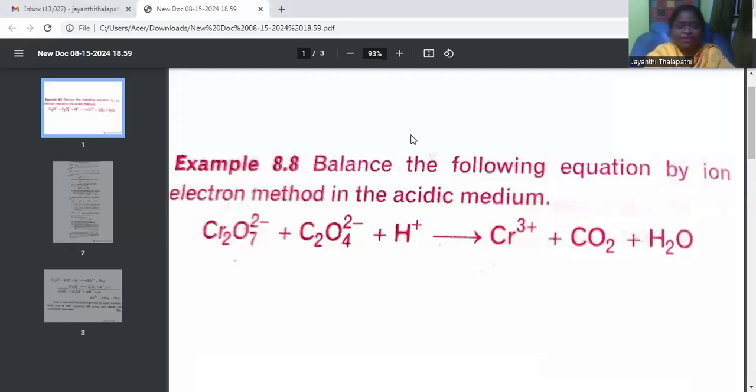Hi, today we are going to see how to balance the equation by using ion-electron method in acidic medium. The same question which is given in the textbook, but still people are finding it difficult, so we'll clarify it. You can try any question. So, Cr2O7^2- plus C2O4^2- plus H+ which leads to chromium ion, carbon dioxide and water. How to balance it?